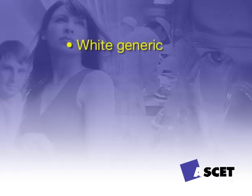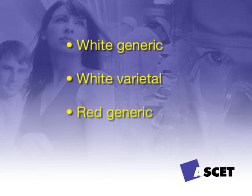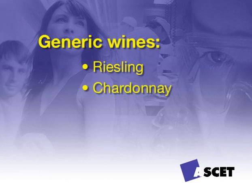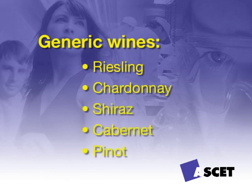You may be required to describe the style of wine a customer has selected. Wines can be further classified into white generic, white varietal, red generic, and red varietal. A varietal wine is a wine made from one single variety — Riesling is a varietal wine. Blends aren't necessarily varietal; for example, a Semillon Sauvignon Blanc is not a straight varietal. Generic wines include Riesling, Chardonnay, Shiraz, Cabernet, and Pinot — unblemished by any other varieties.